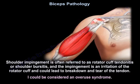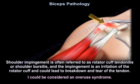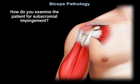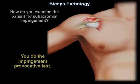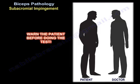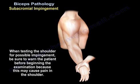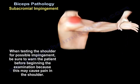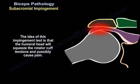Shoulder impingement is often referred to as rotator cuff tendonitis or shoulder bursitis. The impingement is an irritation of the rotator cuff and could lead to breakdown and tear of the tendon; it could be considered an overuse syndrome. The whole idea of the impingement test is that the humeral head will squeeze the rotator cuff tendon and possibly cause pain.